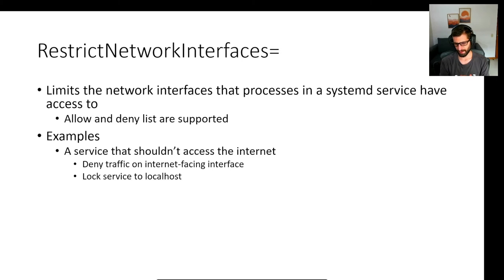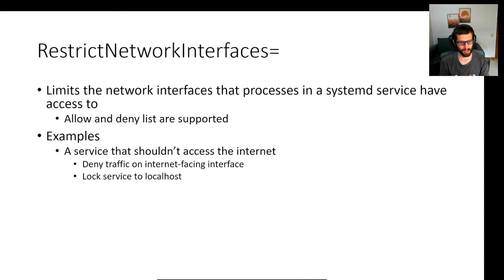We implemented two new properties. The first is RestrictNetworkInterfaces. As the name implies, this restricts the network interfaces that processes can access, supporting both an allow list and a deny list. For example, this could be used when a service shouldn't be accessing the internet — we could deny traffic on the internet-facing interface or lock the service to the loopback interface. The idea is to limit services to only the network interfaces they should be using.